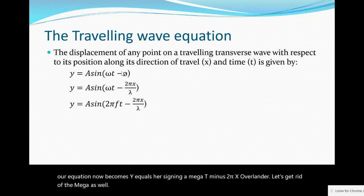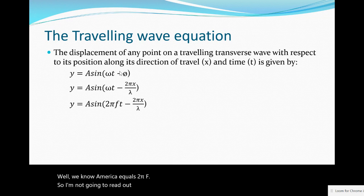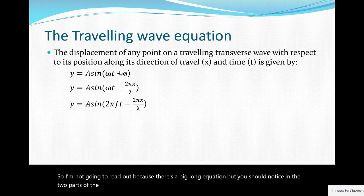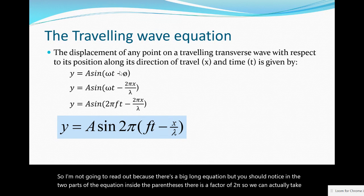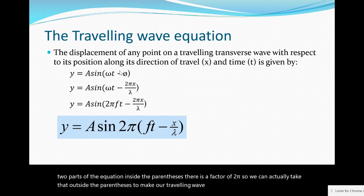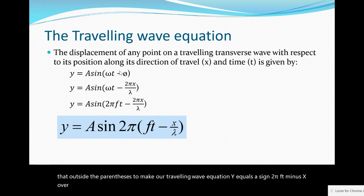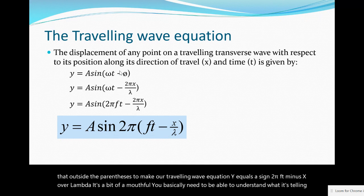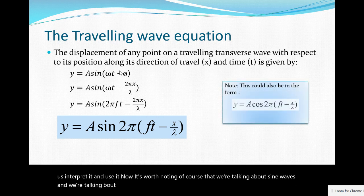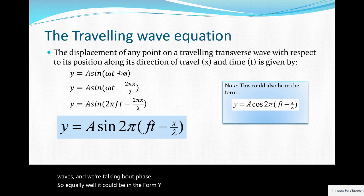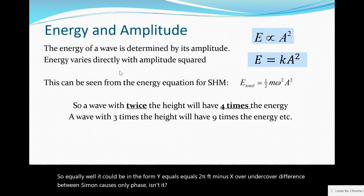There is a factor of 2π in both parts of the equation inside the parentheses, so we can take that outside to make our traveling wave equation: y = A sin(2π(ft - x/λ)). You need to be able to understand it, interpret it, and use it. It's worth noting that it could equally be in the form y = A cos(2π(ft - x/λ)), because the difference between sine and cos is only phase.